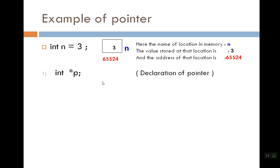Now we have made a pointer: integer asterisk p. So here p is my pointer. When this statement is executed, then in the background, space is allocated for pointer p. This is at address 65528.